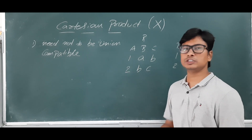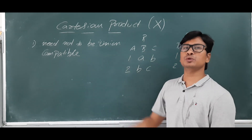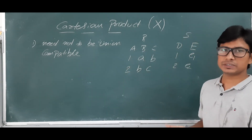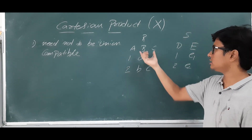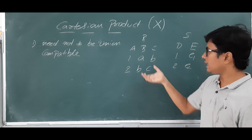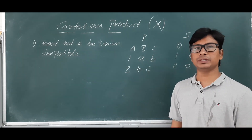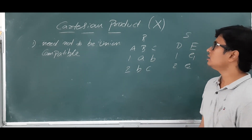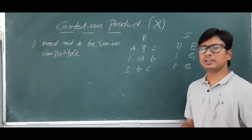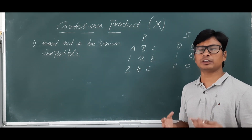Now, for the cross product or Cartesian product between two relations, they need not be union compatible. The degree — that is, the number of attributes — does not need to be the same, and the domains also do not need to be the same.